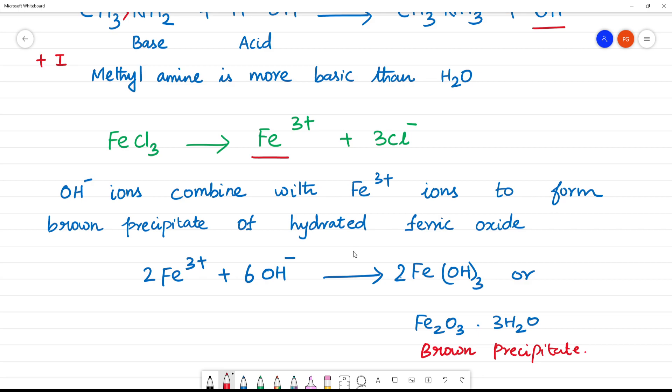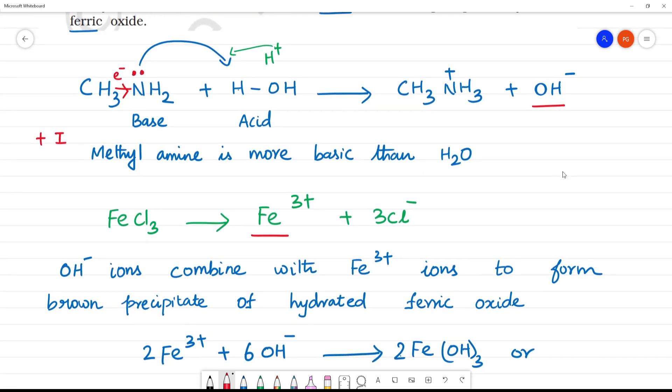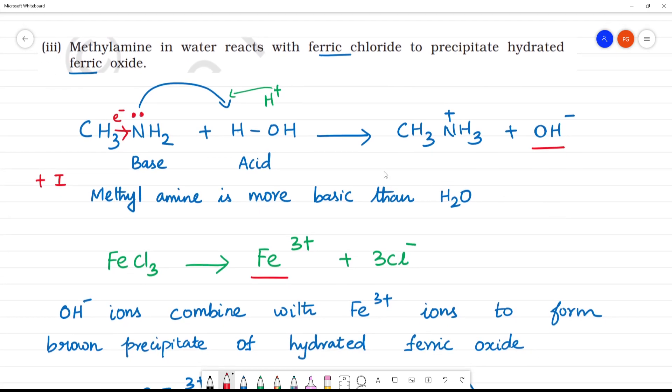Clear. What they are asking in this video, what we need to know is we will generate OH- ion. What we need to do is understand methylamine is more basic than water. That's why we have this concept. This OH- ion will replace Cl3-. When we have Cl3, OH- replaces it. This is because methylamine is more basic than water.